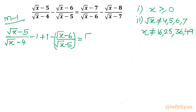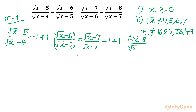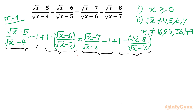The same job we will do on the right hand side also: (√x − 7) over (√x − 6), minus 1 plus 1, minus (√x − 8) over (√x − 7). Now we can take LCM or make the denominator common. From these two terms I will take 1, and these two we will consider for simplification.